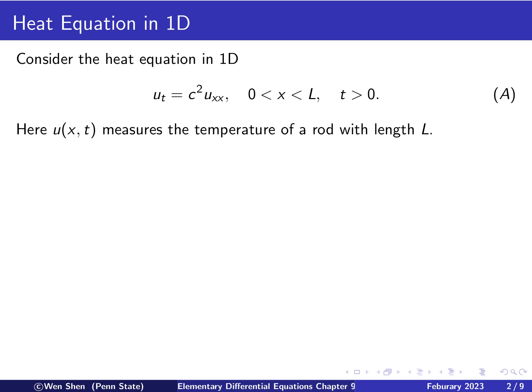The equation is u_t equals c squared u_xx. The reason we write c squared here is to ensure that this number is positive. This equation is defined on the interval from 0 to L and is given for t bigger than 0. The unknown u here represents the temperature of a one-dimensional object of length L — you can think of it as a rod with length L.